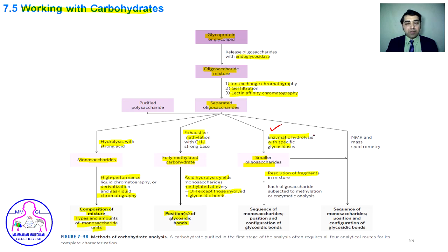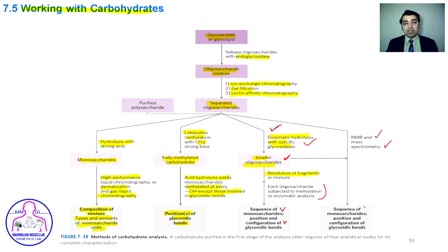Enzymatic hydrolysis with specific glycosidases produces smaller oligosaccharides. Each oligosaccharide mixture is then subjected to methylation or enzymatic analysis. These experiments together determine the sequence of monosaccharides and the position and configuration of each glycosidic bond. NMR or mass spectrometry can also provide structural information about the sequence of monosaccharides and the position and configuration of glycosidic bonds.